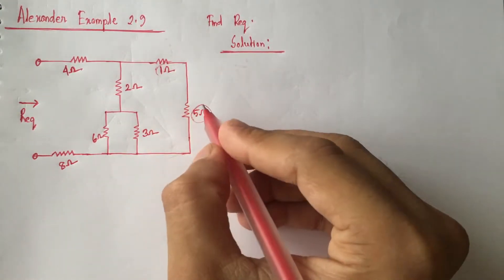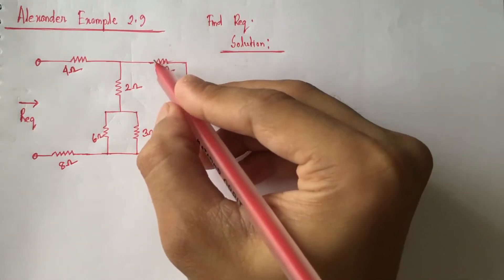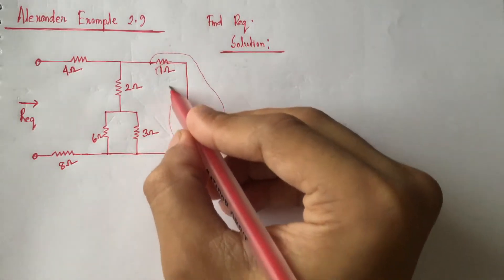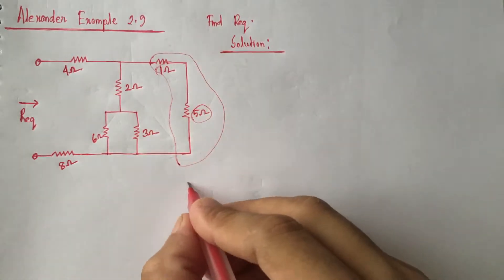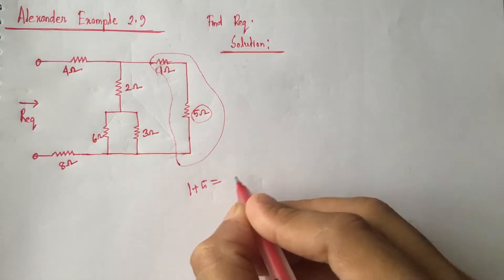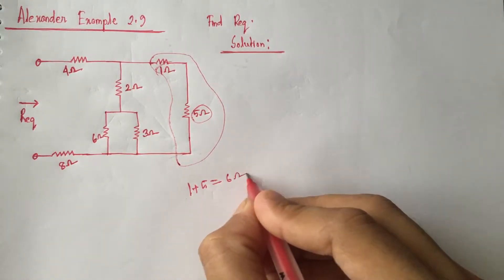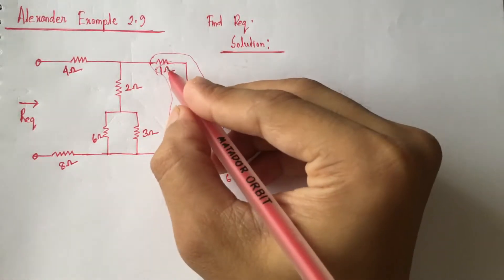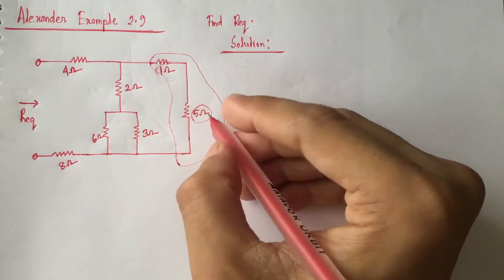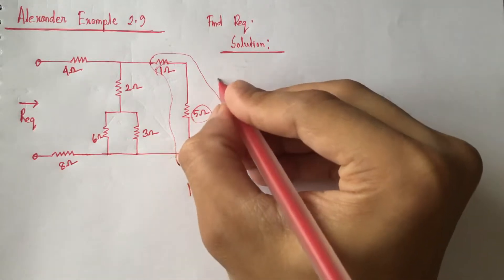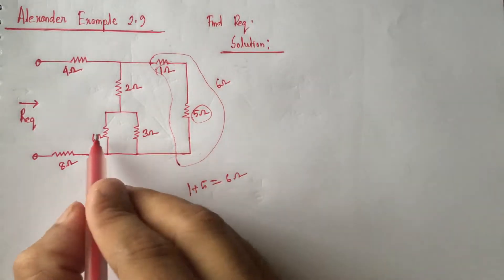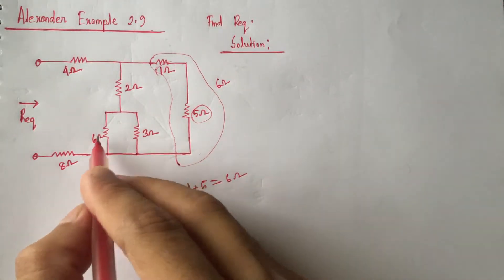From the circuit we see that this 1 ohm resistance and 5 ohm resistance are in series, so they will be added directly. Direct addition gives 6 ohm, so this 1 ohm and 5 ohm resistance can be replaced by a resistance of 6 ohm.